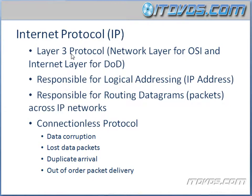The Internet Protocol is a Layer 3 protocol — that's Layer 3 in the OSI model. In the real world, we're going to refer to the OSI model for the most part. We may refer to the DoD model, but normally we'll specify this is Layer 2 of the DoD model. When we talk about a Layer 3 device or a Layer 2 device, we're really talking about the OSI model. So IP is Layer 3, and in the DoD model it's actually Layer 2 — the Internet layer.